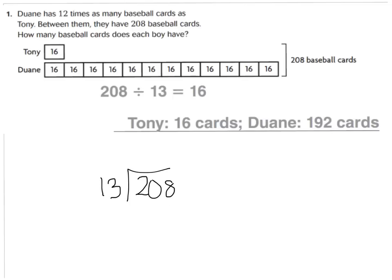So 208 divided by 13 is going to be 16 in each group. Now look at what it says. How many does each boy have? In this case you would put 16 for Tony's box and you would fill in each box for Dwayne as 16. And then you would multiply 16 times 12. And when you work out 16 times 12 you would get your answer. So Dwayne has 192 cards and Tony has 16. We're going to do a couple practices together here just so you can understand how. And tomorrow in class we're going to do a lot of practices to get really good at this strategy.